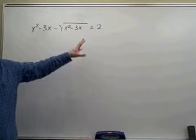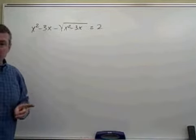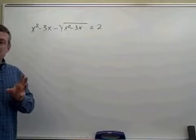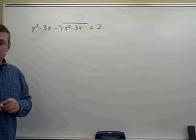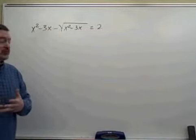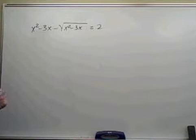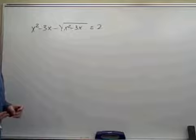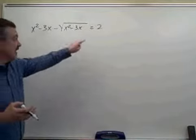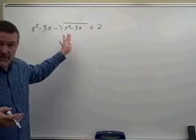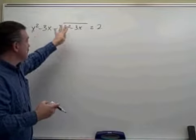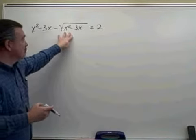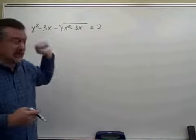And that is to first isolate the radical expression on one side of the equation, then raise both sides of the equation to the appropriate power to undo the root. So in order to do that, I might add the square root of x squared minus 3x to both sides, and I might subtract 2 from both sides so as to bring this term to the left side and move the radical expression to the right side to isolate it.